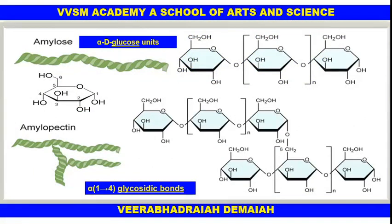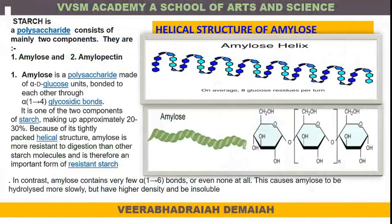Alpha-D glucose units are arranged in a straight chain structure in amylose, with alpha-D glucose 1,4 glycosidic bonds. In amylopectin, they are arranged in a branched structure. Both are important units in carbohydrates, particularly starch. Amylose is a polysaccharide made up of alpha-D glucose units bonded through 1,4 glycosidic bonds, making up about 30% of starch because of its tightly packed helical structure.